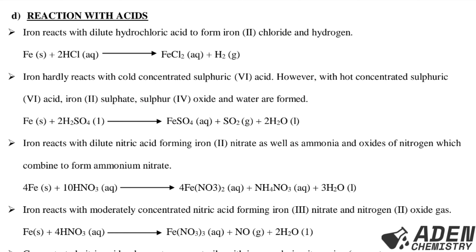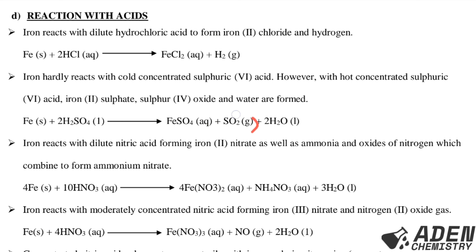The equation for iron with hot concentrated sulfuric acid is: Fe(s) + 2H2SO4(conc) → FeSO4(aq) + SO2(g) + 2H2O(l). Observations include: the green solid dissolves in the acid; a pale green solution is formed due to iron(II) sulfate; and a colorless gas with a pungent irritating smell is produced due to sulfur dioxide gas.